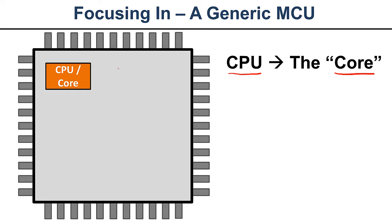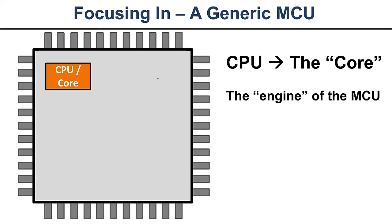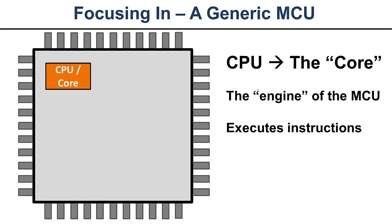The core is the piece of the puzzle that makes everything work. It's responsible for executing code and is essentially the engine of the microcontroller — it does everything. Fundamentally, its job is to get instructions and execute them. Instruction sets are generally pretty simple: move data, add, multiply, subtract, and do comparisons.